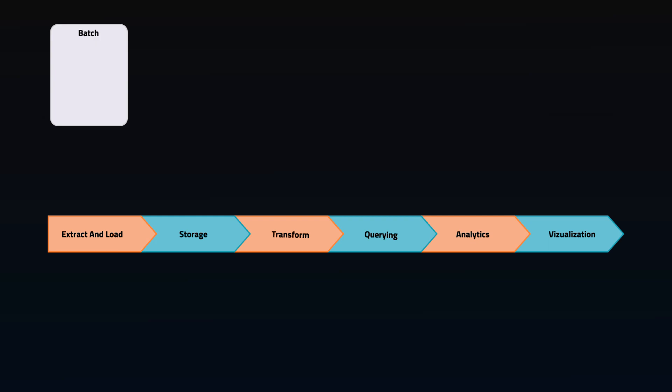We start with a batch extraction using Data Factory. This can do ELT using mostly connectors, which are built-in connections to various source APIs. The EL is done in batches, either timed or on triggers. If we want to add streaming from certain data sources, we can add in Event Hubs.